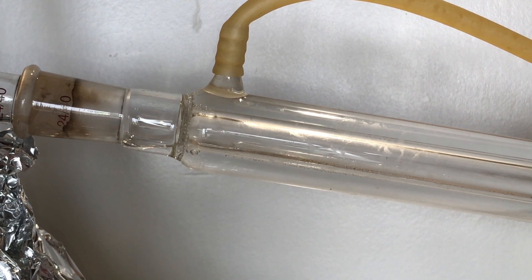In detail, you can see that the sulfuric acid vapors quickly condense in the first two centimeters of the column.